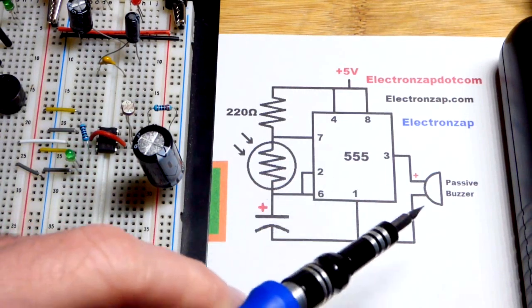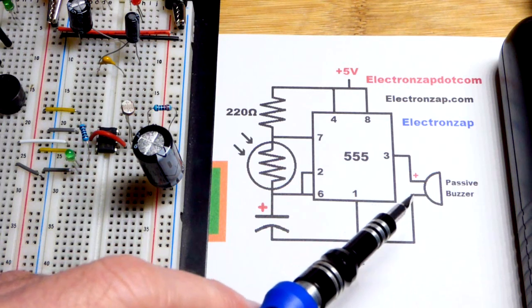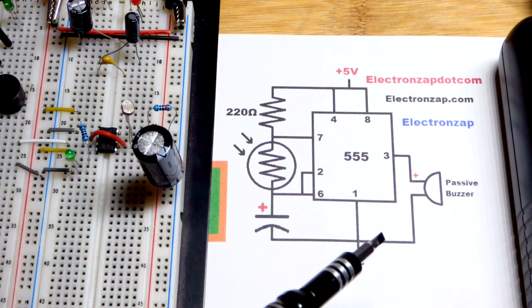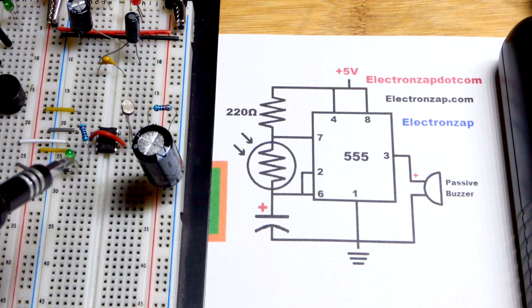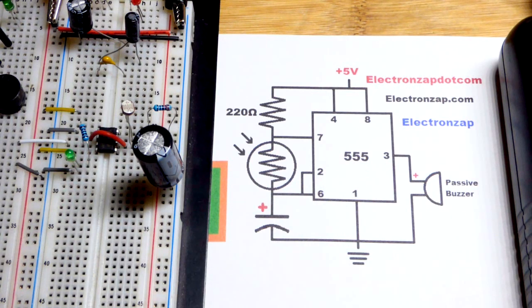So now this video is focused on the passive buzzer. It's a passive because it doesn't do anything on its own. You need to give it a steady stream of high and low on-off pulses.